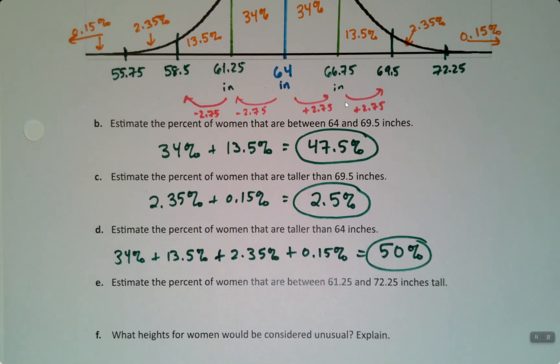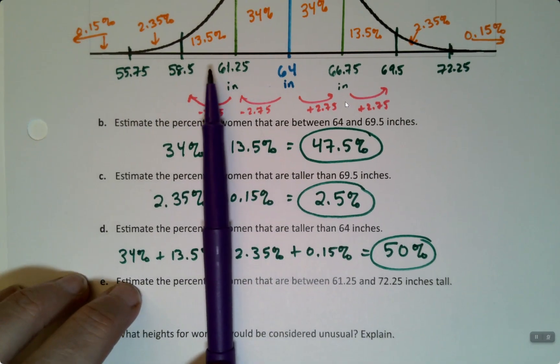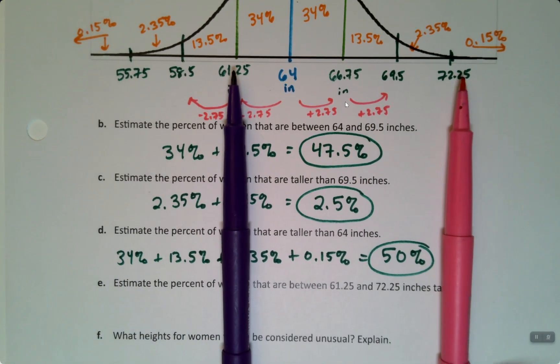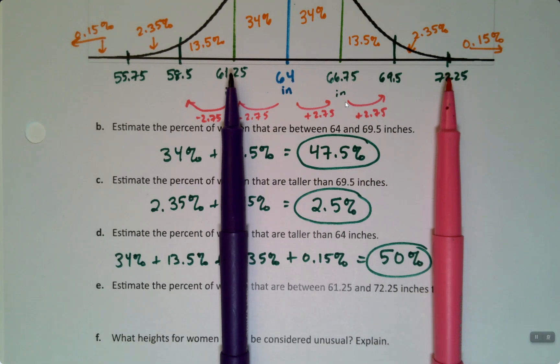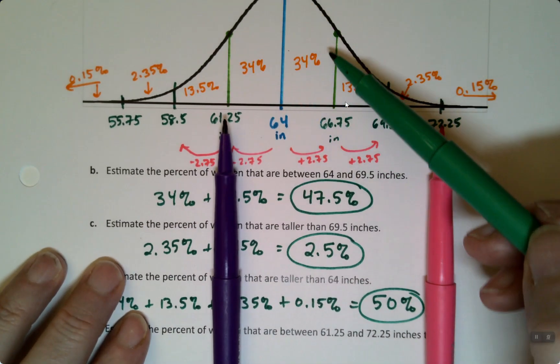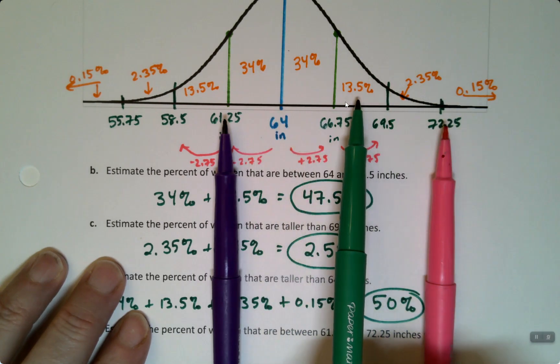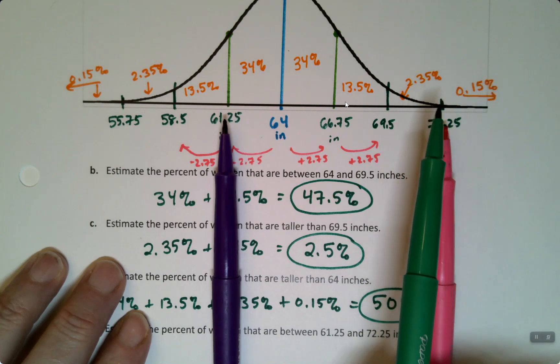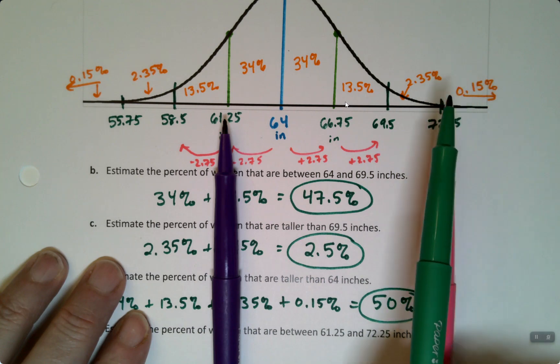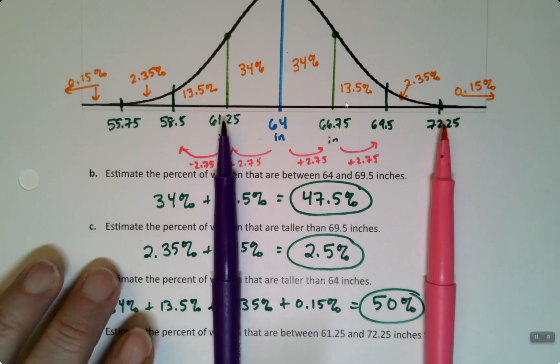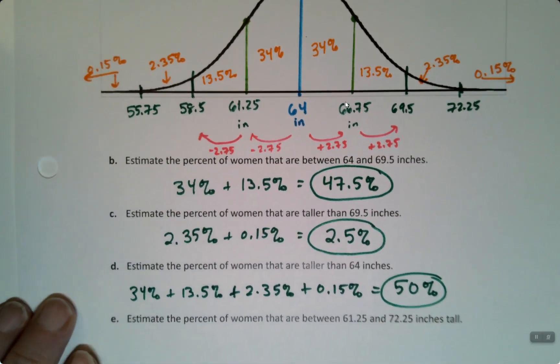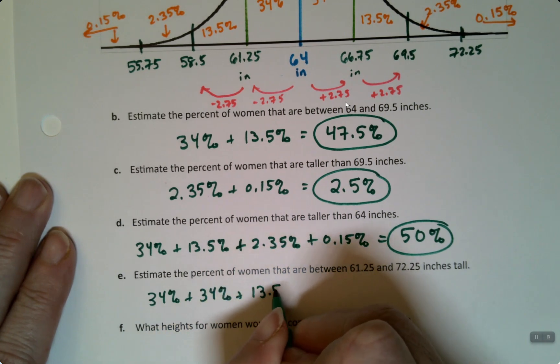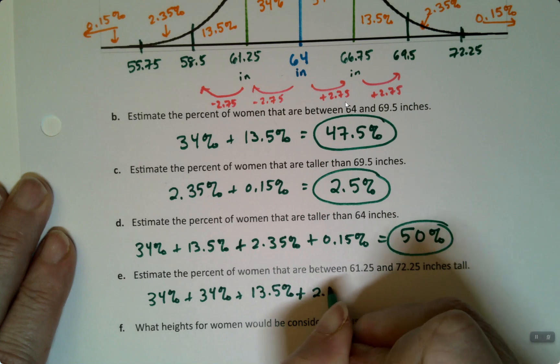Letter E is one that a lot of students get incorrect. So let me show you. So 61.25 inches tall is right here, and then 72.25 is over here. So the women that are between those values will be all these spaces between those lines. So you'd add up 34, 34, 13.5, and 2.35, and you stop right there. You don't include the 0.15, because you're stopping at 72.25. This 0.15 is all the women that are taller than 72.25, so they don't get counted.